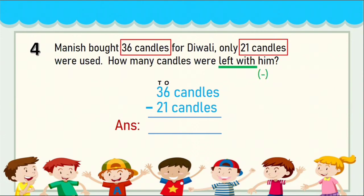Subtract 1 from 6 to get 5, then subtract 2 from 3 to get 1 — the answer is 15. The last line asks how many candles were left, so write '15 candles left.'